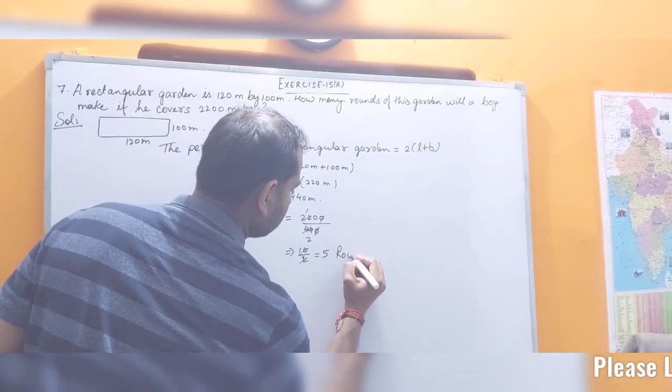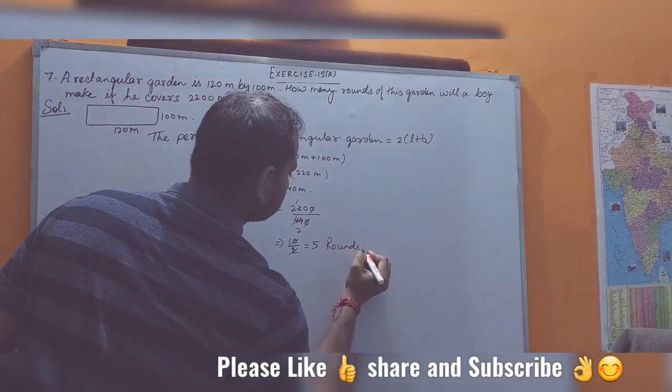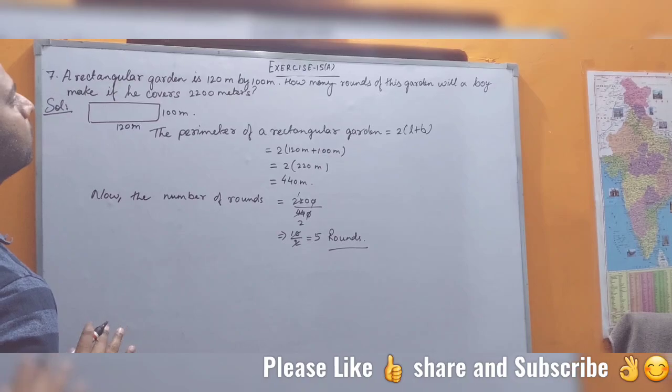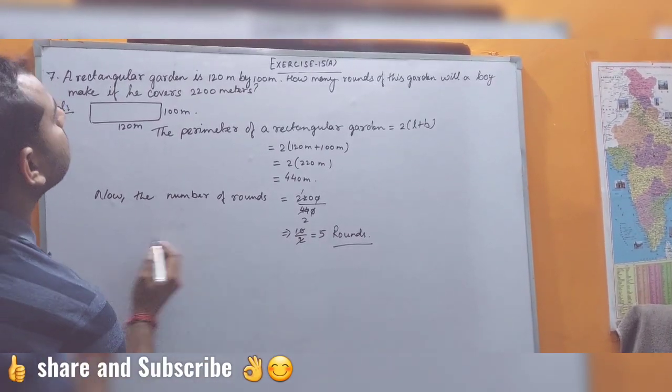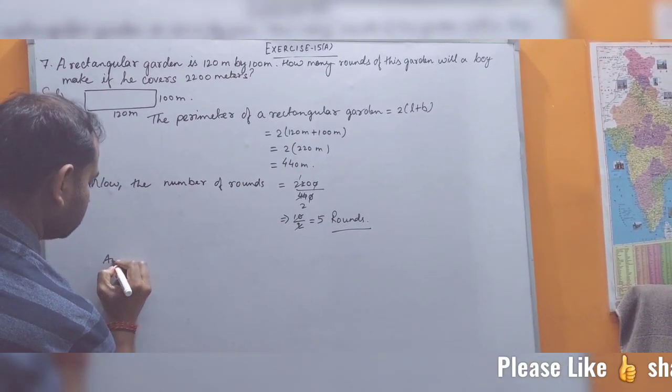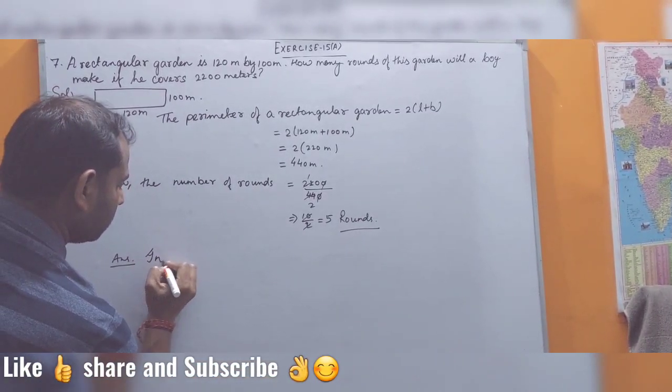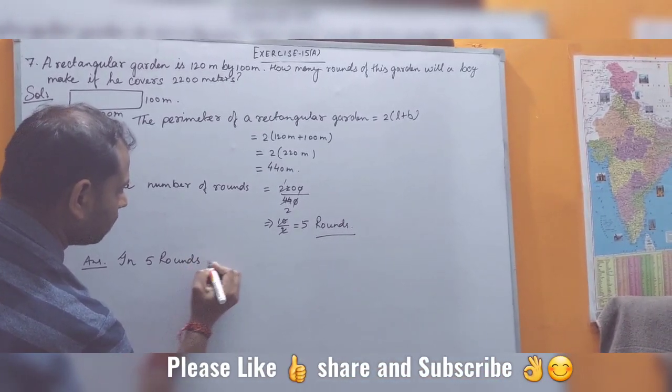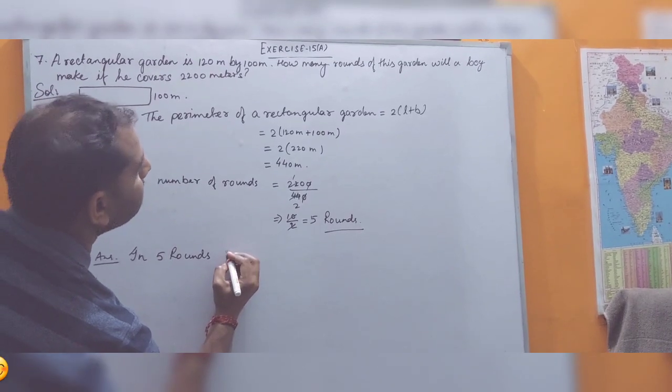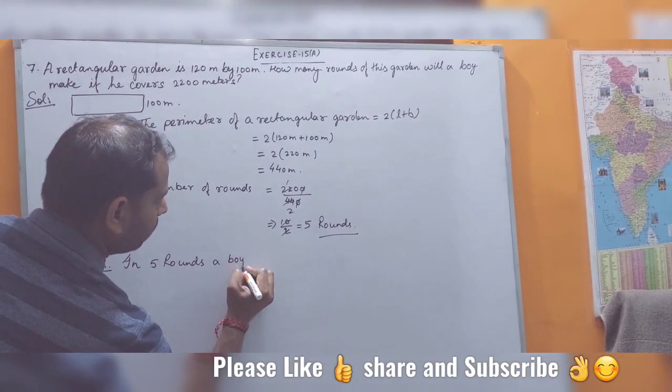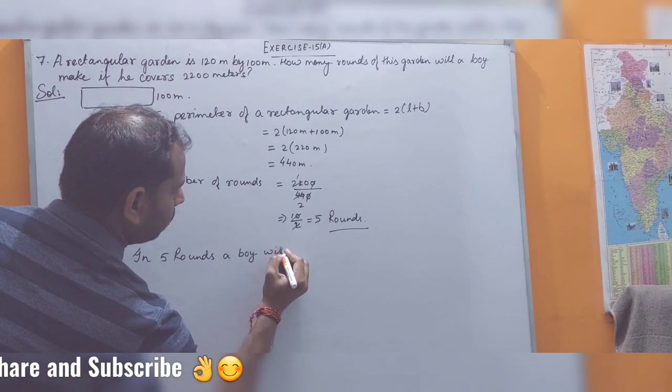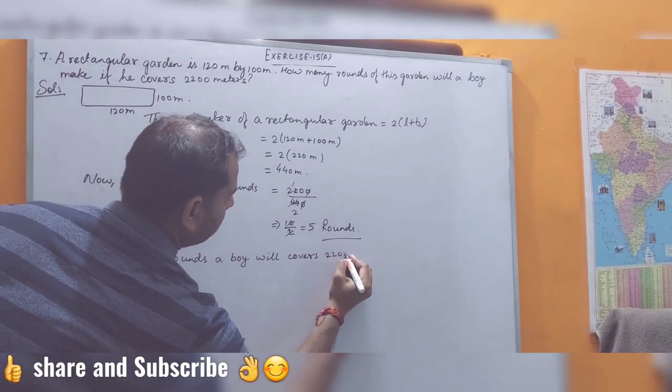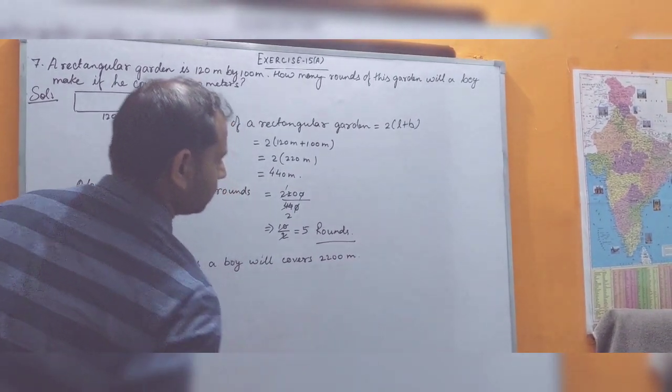In 5 rounds, the boy will cover 2200 meters. So the answer is: in 5 rounds, the boy will cover 2200 meters. Thank you.